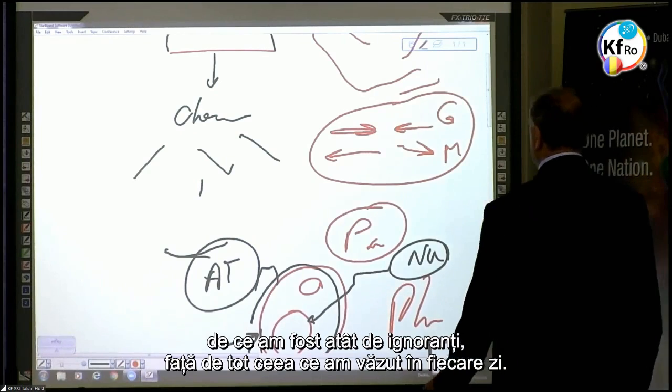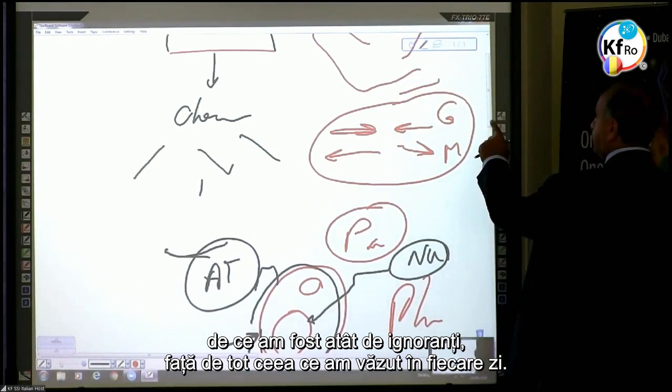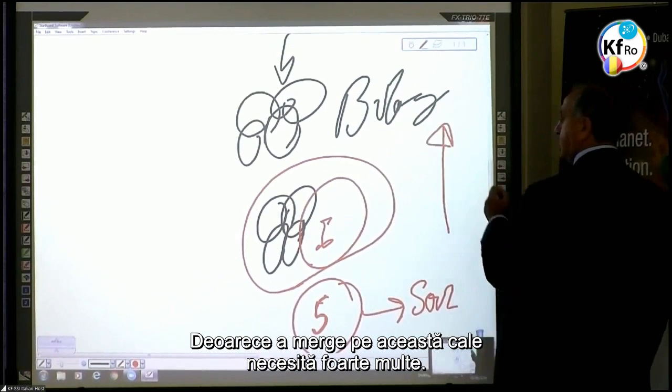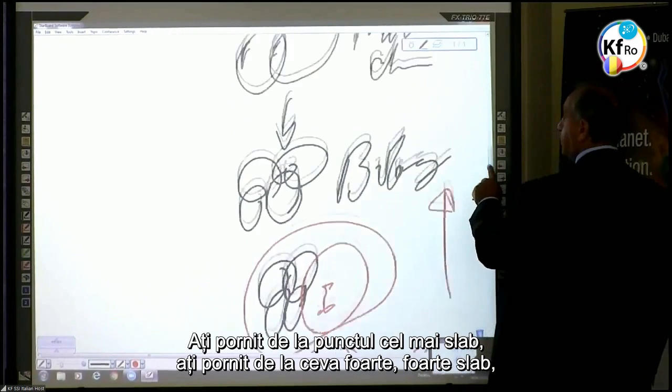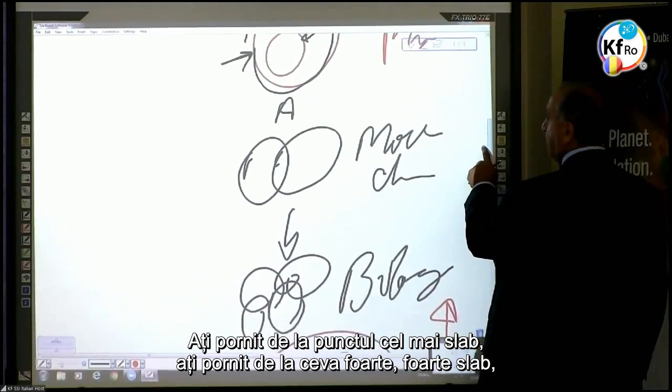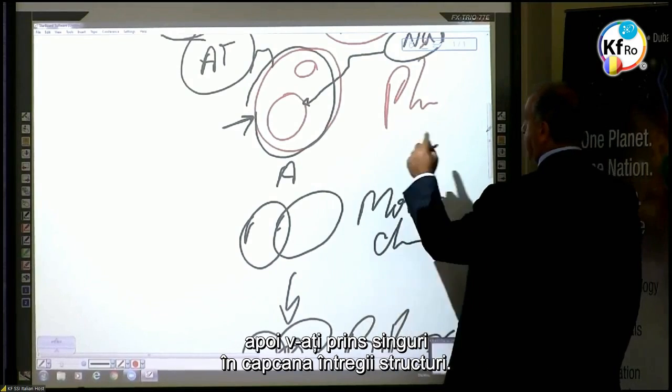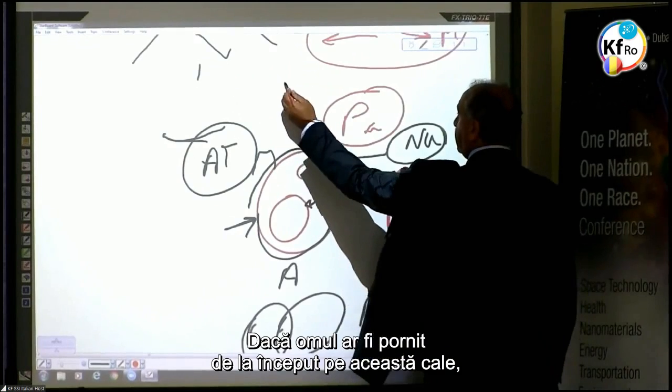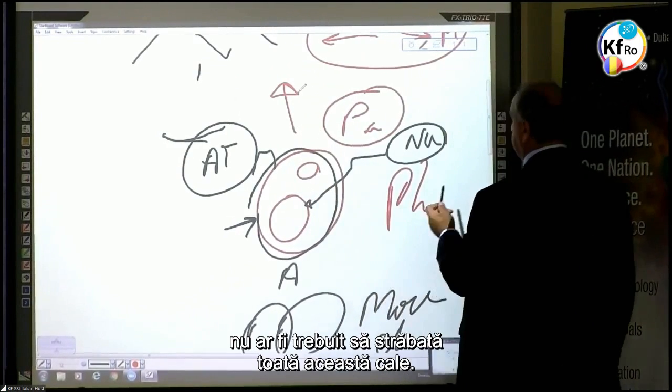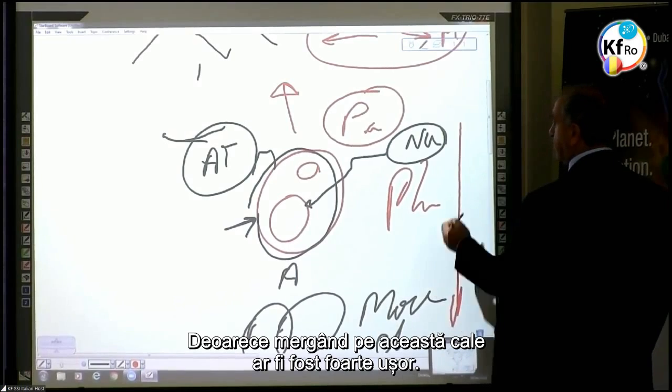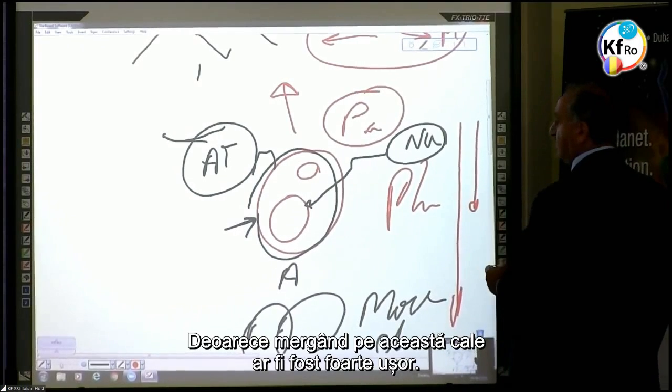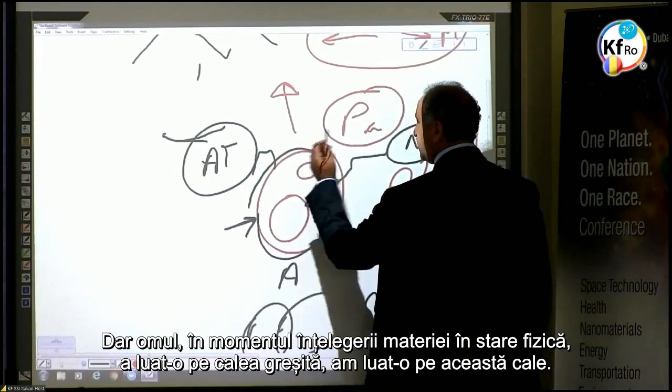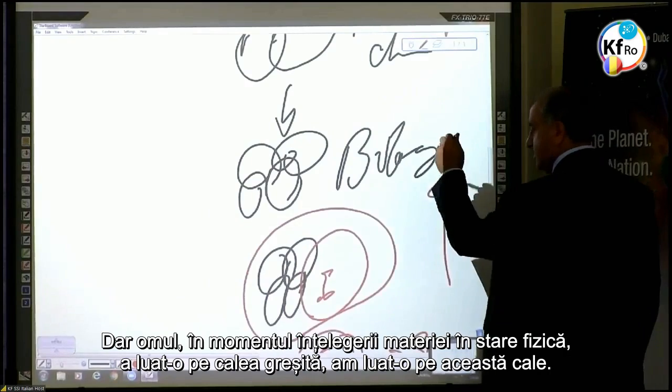To go this way needs a lot. You start from the weaker point, very very weak, and then you get yourself trapped in the whole structure. If man would have gone from the beginning this way, he didn't have to go all this way, because going this way would have been very easy. But the man, at the point of understanding the matter in a physical state, went the wrong way.